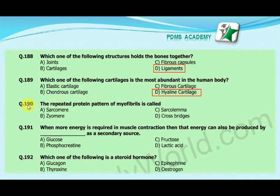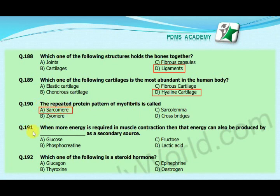Our next MCQ is: the repeated protein pattern of myofibrils is called — option A: sarcomere, option B: ziomere, option C: sarcolemma, option D: cross bridges. Our correct answer is A, sarcomere.